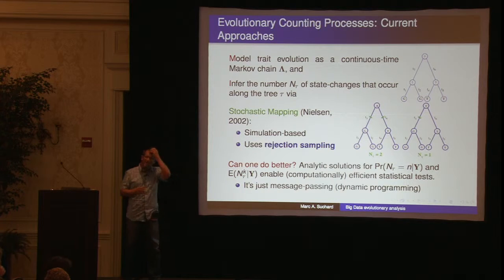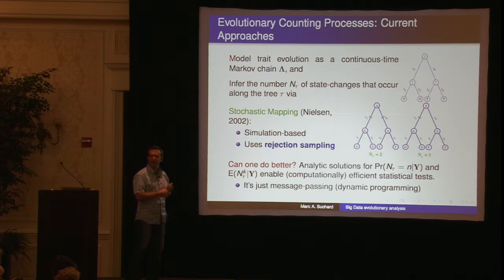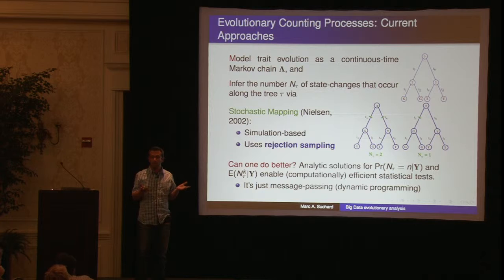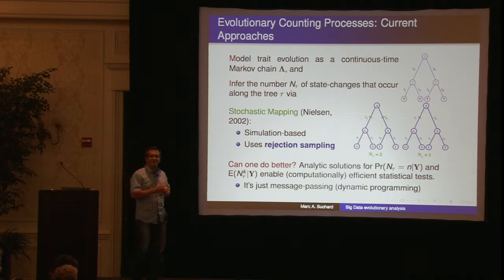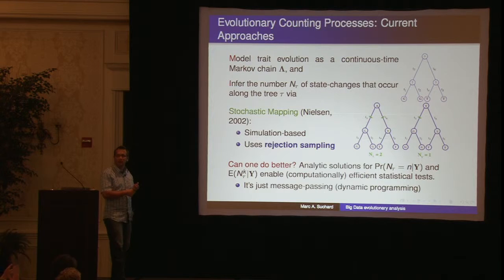When I read that, I thought that really can't be right. Using message passing, and knowing what the CTMC is, I can compute the likelihood of the observed data — the sequences at the bottom of the tree — and that's a probability statement, which is just the expectation of an indicator function. So that began me thinking: what is the family of functionals for which there's a polynomial time algorithm for computing the expectations of the underlying continuous time Markov chain?